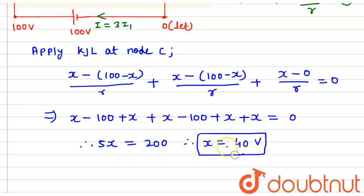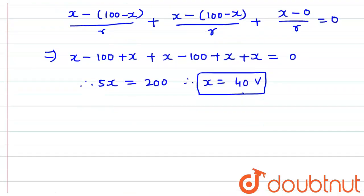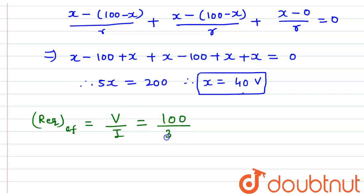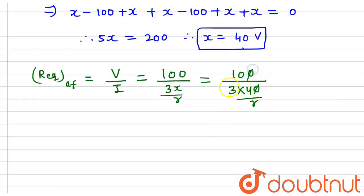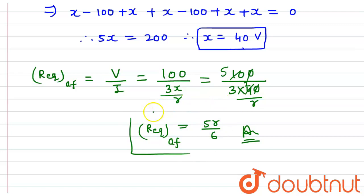Since x equals 40 volt, the equivalent resistance across A and F can be given as R_eq = V upon I. The voltage is 100 volt and the total current I is 3x upon R. So R_eq = 100 upon (3 times 40 upon R) = 100R upon 120, which simplifies to 5R upon 6. So the equivalent resistance across AF is 5R/6 ohm, and that is the answer to this problem.